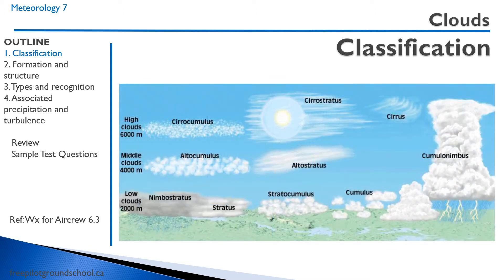Here's a picture to help you visualize it. We have our low clouds — nimbostratus and stratocumulus. Then our middle clouds — altocumulus and altostratus. Our high clouds — cirrocumulus, cirrostratus, and cirrus. And on the right side we have our vertical development clouds, cumulus and cumulonimbus.